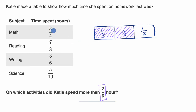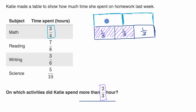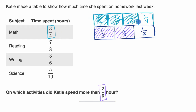Now, what about three-fourths? Let's make this a whole. If I'm going to think in terms of fourths, I have to divide it into four equal sections — splitting into two equal sections and then each of those into two. So these are four equal sections: a fourth, a fourth, a fourth, and a fourth. Three of those fourths would be one, two, and three. You can see that three-fourths is more of a whole than two-thirds — it's greater than two-thirds. So Katie spent more than two-thirds of an hour on math.